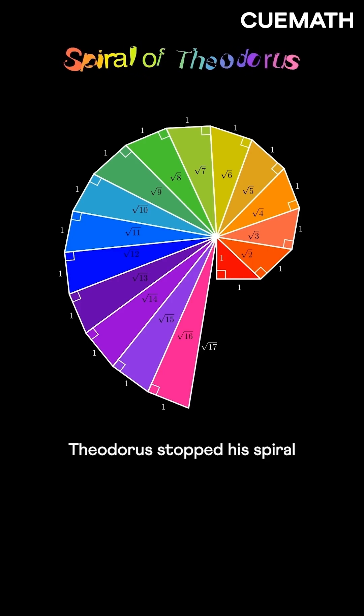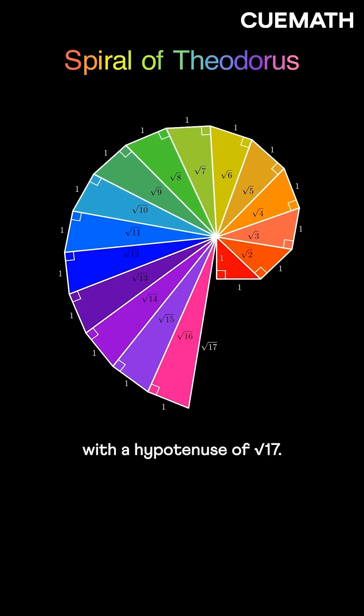The ancient Greek mathematician Theodorus stopped his spiral at the triangle with a hypotenuse of √17. Why do you think he did that?